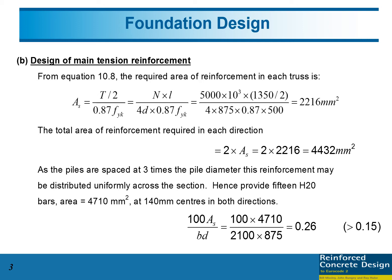By using this equation, AS equals T divided by 2 divided by 0.87 FYK, which equals N multiplied by L divided by 4D multiplied by 0.87 FYK. N is the ultimate load acting on the column, 5000 kN, multiplied by L. Because the distance pile to pile is 2L, so L is 1350 divided by 2.